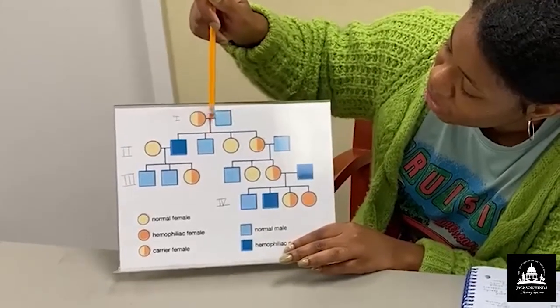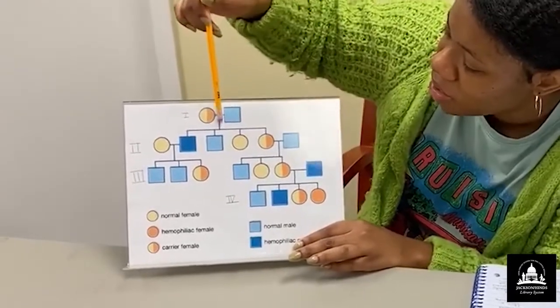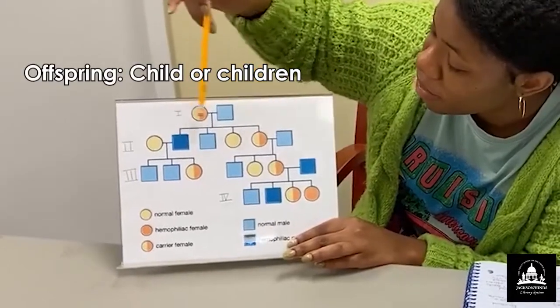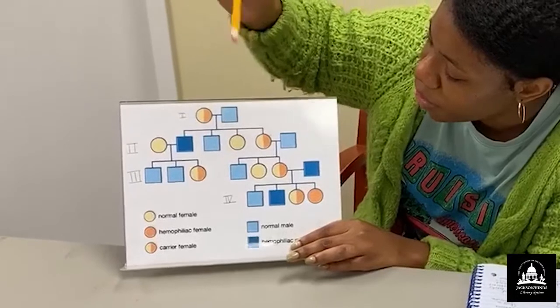And bridging down from that line, we have a vertical line. Okay. So this is showing that they have offspring from their marriage. We have a vertical line going to a bracket.